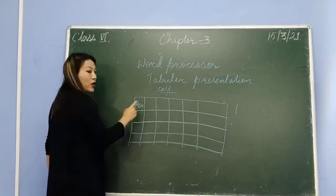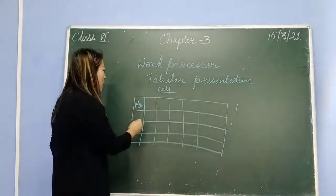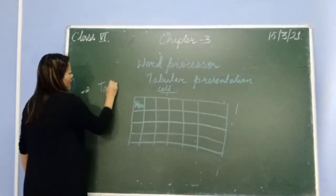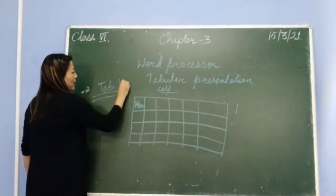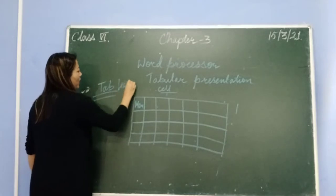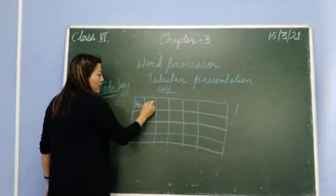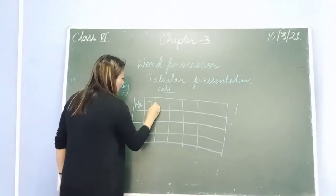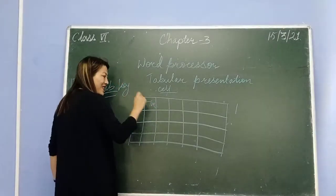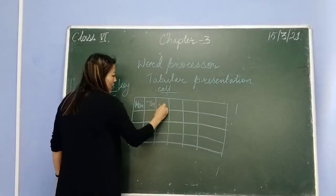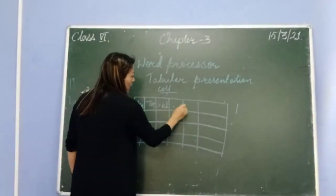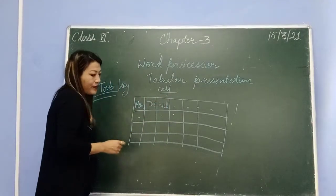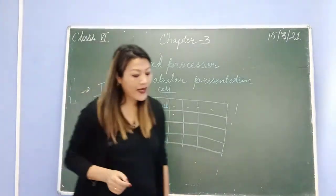For example, type 'Monday' in a cell, then press the Tab key and your cursor moves to the next cell where you can type 'Tuesday', then press Tab again and the cursor moves to the next cell. That is how you insert data using the Tab key.